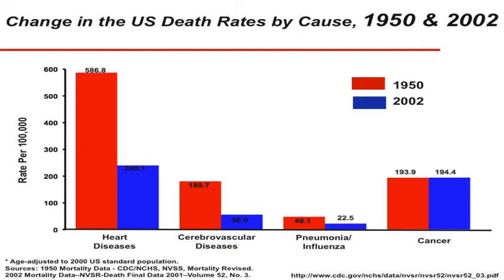I want to show you data that everyone in this audience knows: mortality by different causes between 1950 and around 2000. The red bars are mortality in 1950 for heart disease, stroke, pneumonia, and cancer. We've made great progress in these areas over the last 60-some years. Cancer — and it is unfair to lump all cancer together — progress has not been as impressive. One of the reasons is because we don't know the mechanism for many cancers, and there are obviously lots of different types.